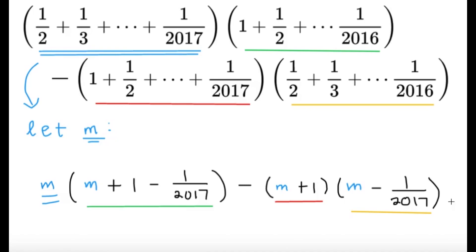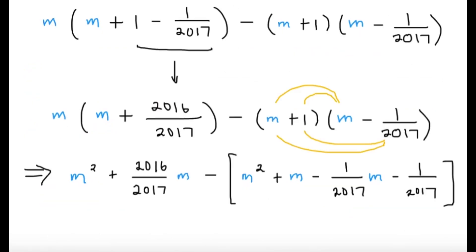So we can just use our skills in algebra to simplify this. Let's try to do that. Now we can do some simplification first, m plus one minus one over 2017, that's going to be simply m plus 2016 over 2017.